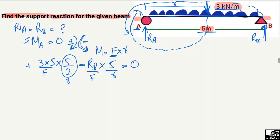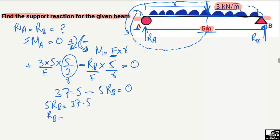So: 3 × 5 × (5/2) minus 5·R_B equals zero. Solving: 37.5 minus 5·R_B = 0. Shifting to the right side gives 5·R_B = 37.5, and dividing by 5, R_B comes out to be 7.5 kilonewton.